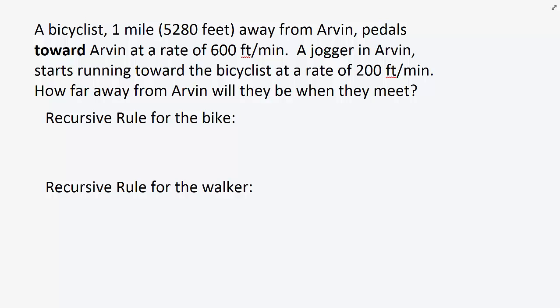Here's another example about the relationship between recursive rules and their graphs. A bicyclist, one mile or 5,280 feet away from Arvin, pedals toward Arvin at a rate of 600 feet per minute.